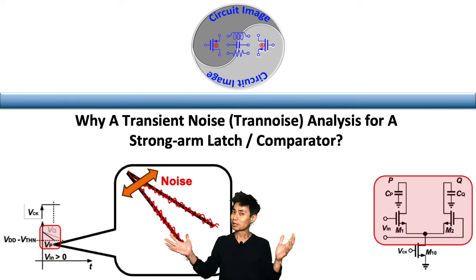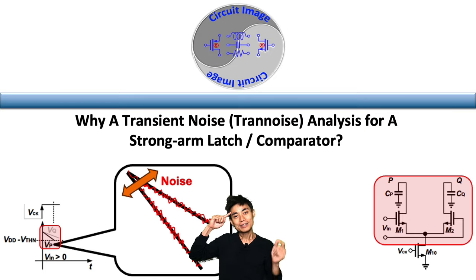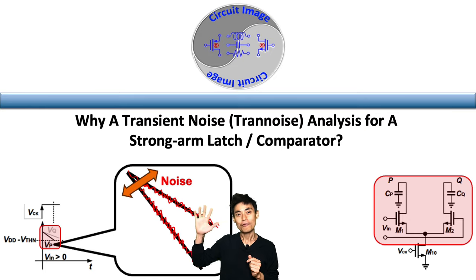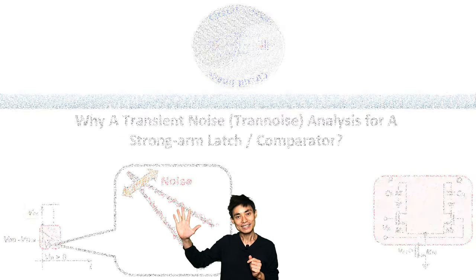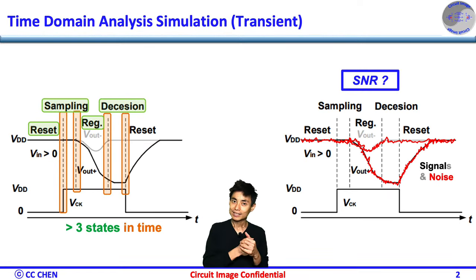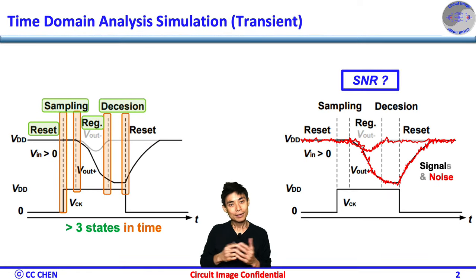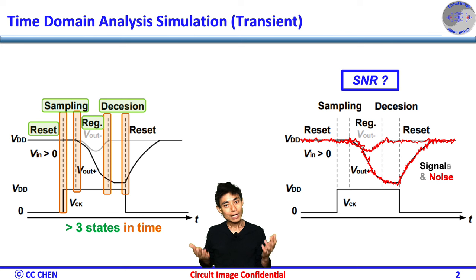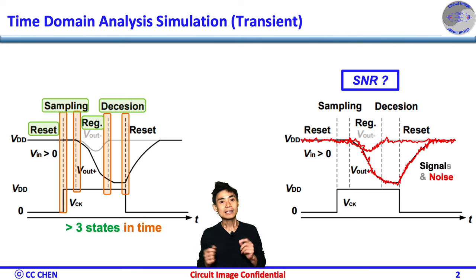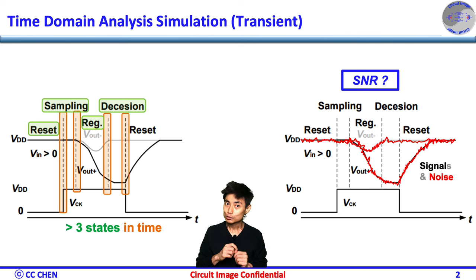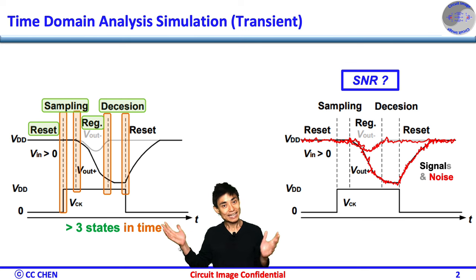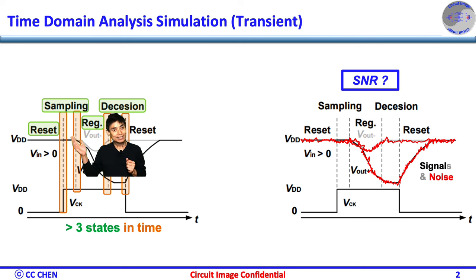So what can we do? Think about the time domain simulation for 5 seconds. The sampler has at least 3 steps in time. Therefore, comprehensive transient analysis in the time domain provides a complete simulation of signal transition between different states: reset, sampling, and rejection.